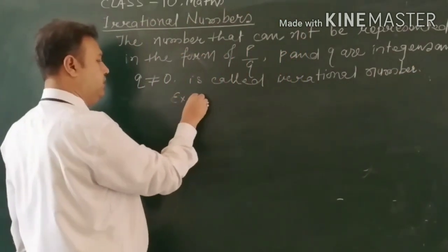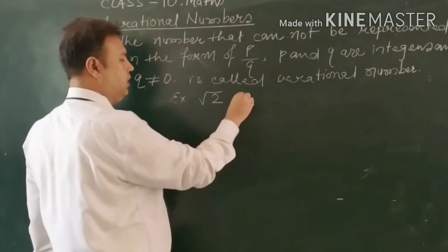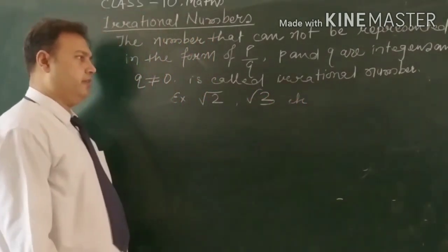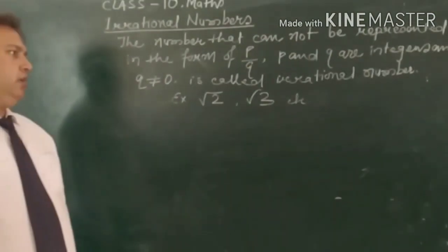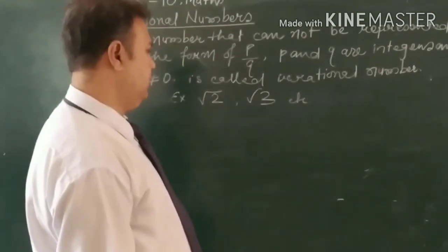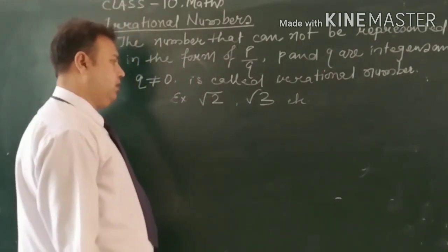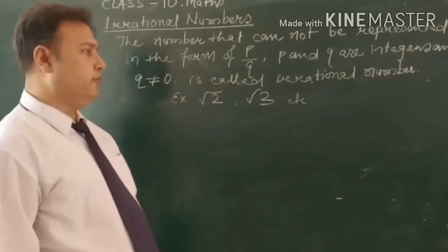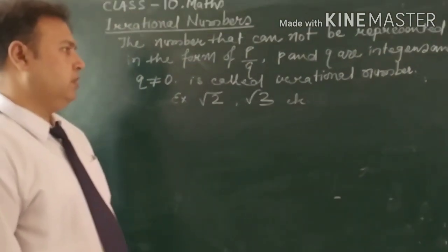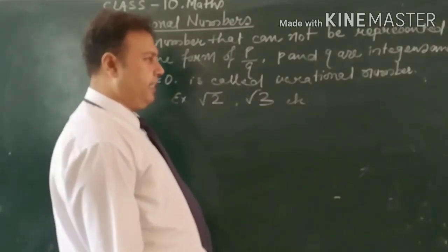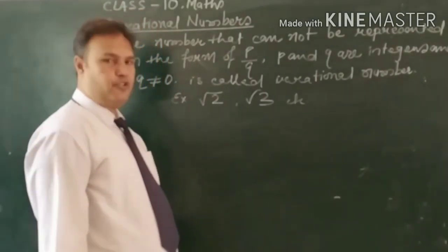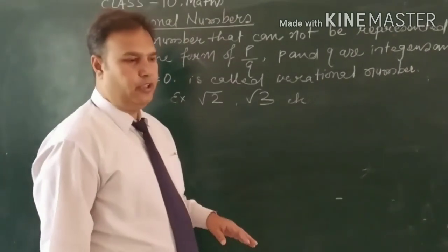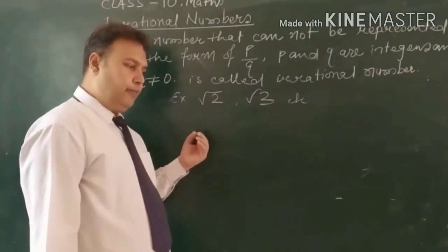For example, root 2, root 3 — these are accepted. But for verification, we have to find the value of root 2 and value of root 3. That will be slightly tough. First of all, we will find the value of root 3, then we will decide if it can be expressed in the form of P upon Q or not.